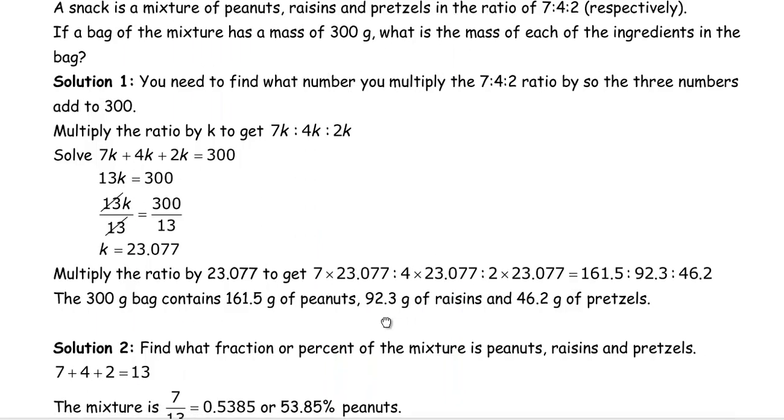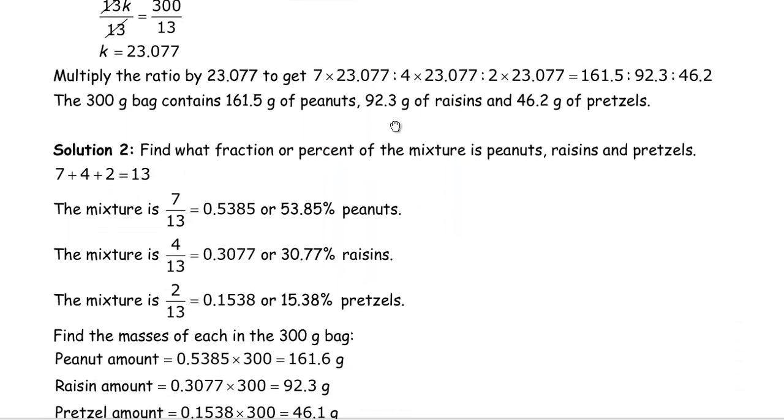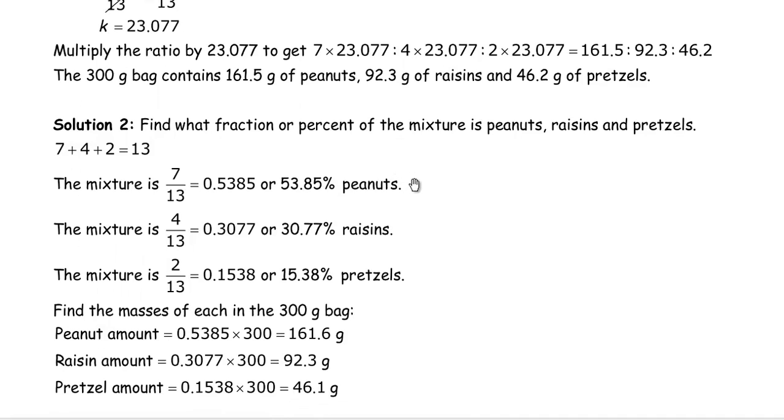So that's the first solution. Second one here, we're going to find the fraction or percent of the bag that's peanuts, raisins, and pretzels. So the 7, 4, and 2 from the numbers in the ratio add to 13. The 7 was the peanuts, so this means the mixture is 7 thirteenths, or 0.5385, or 53.85% peanuts.